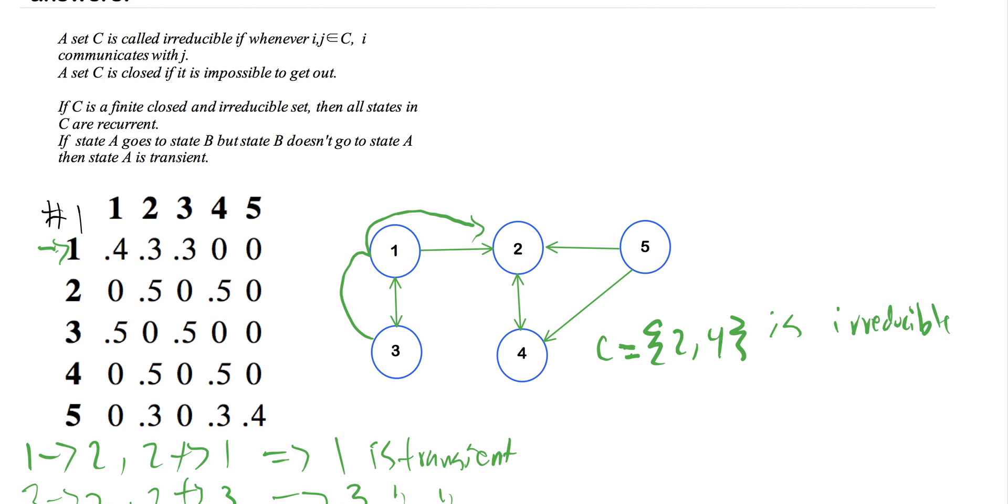Now this set is also closed, right? Because say we started at state five. Well, if we don't go back to state five, we go to state four, state two, we just remain in state four and state two. There's no changing this. We're just stuck there. We can't get out. We can only get to two and we can only get to four.